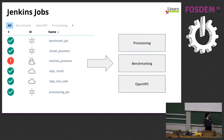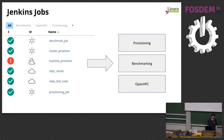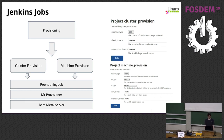Here are the main Jenkins jobs used in the lab: the benchmark job, the OpenHPC install and test suite jobs, and the whole provisioning job ecosystem. The provisioning job ecosystem has two main entry points: the cluster provisioning job and the machine provisioning job — you can provision the whole cluster or a single machine, which is especially useful for benchmarks.